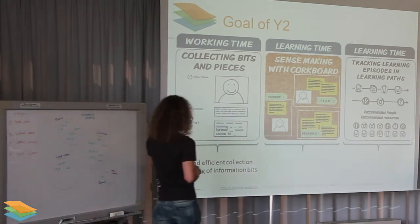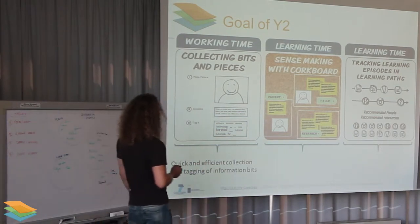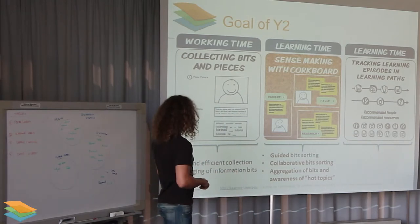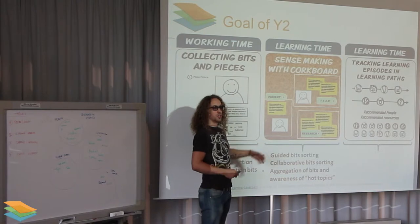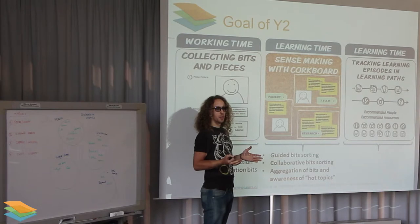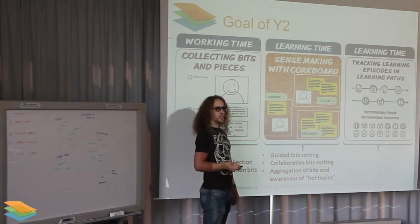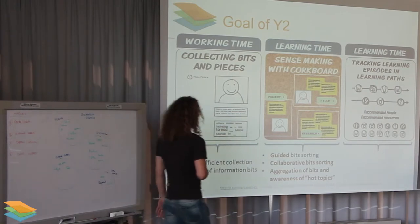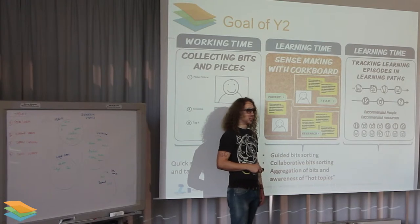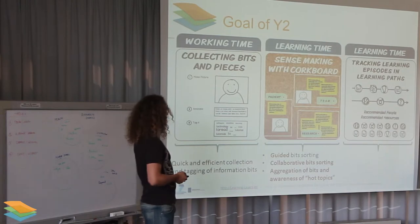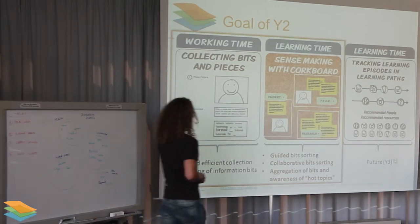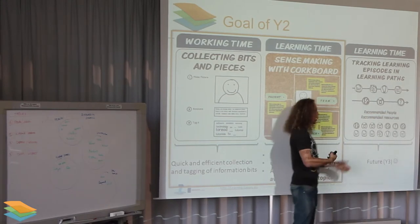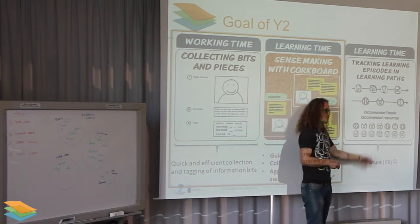Currently, the system efficiently supports the collection and tagging of information bits, and also the bit sorting. The goal of year two is to support not just bit sorting but guided bit sorting — supported by recommendations for labeling categories and finding other informal learning experiences matching the current learning need. Additionally, collaborative sorting and aggregation of bits into hot topics currently important in the practice should be supported. The arrangement of learning episodes is then the target of year three.